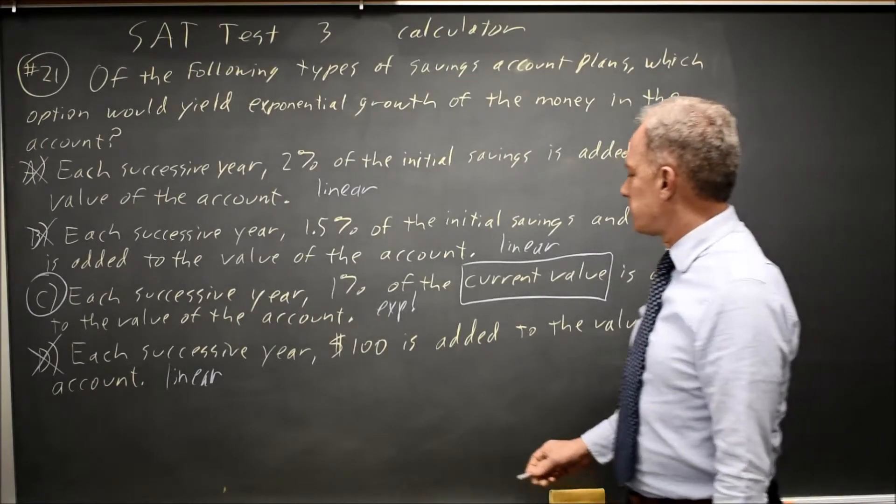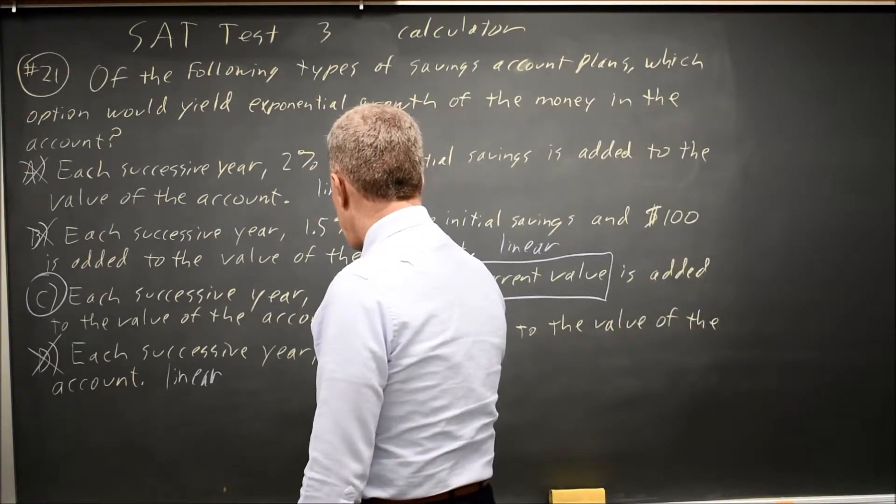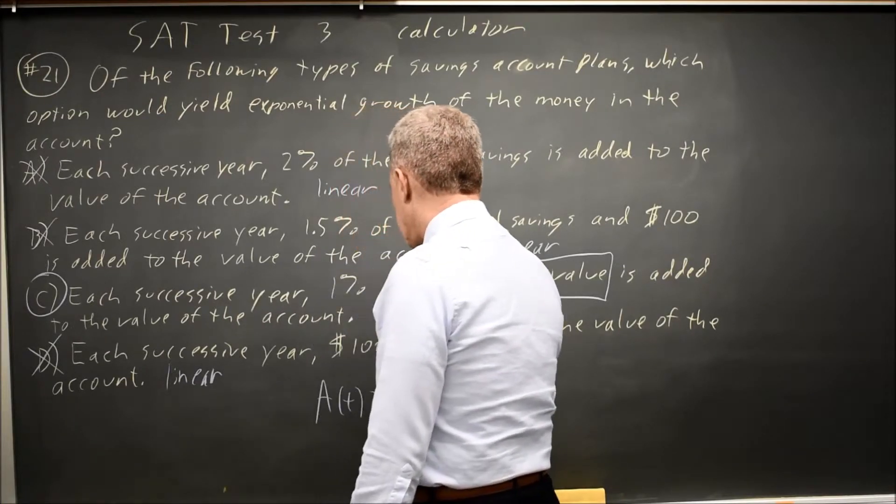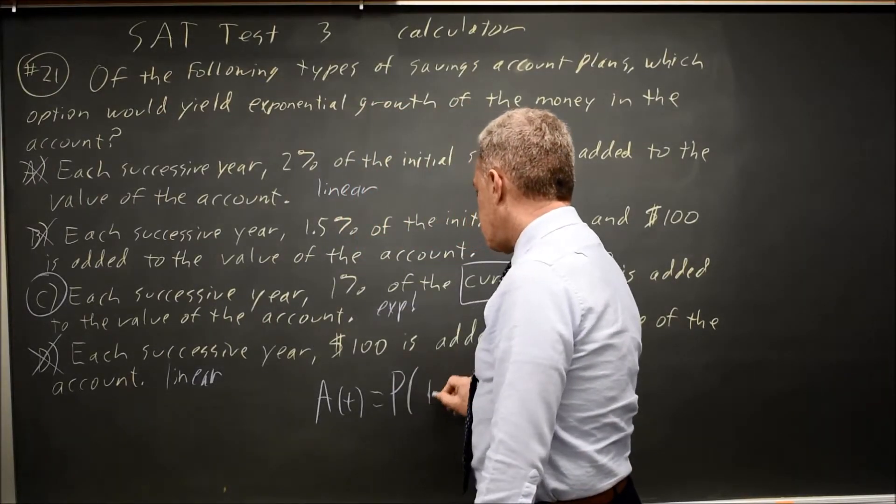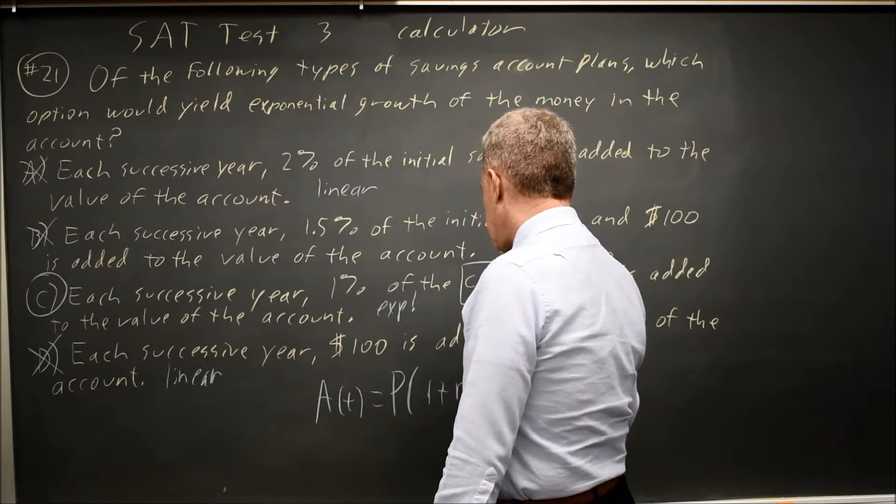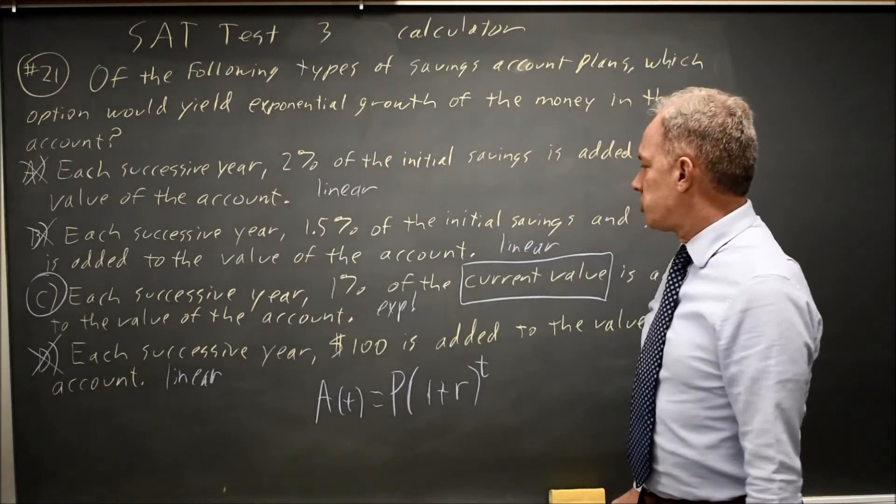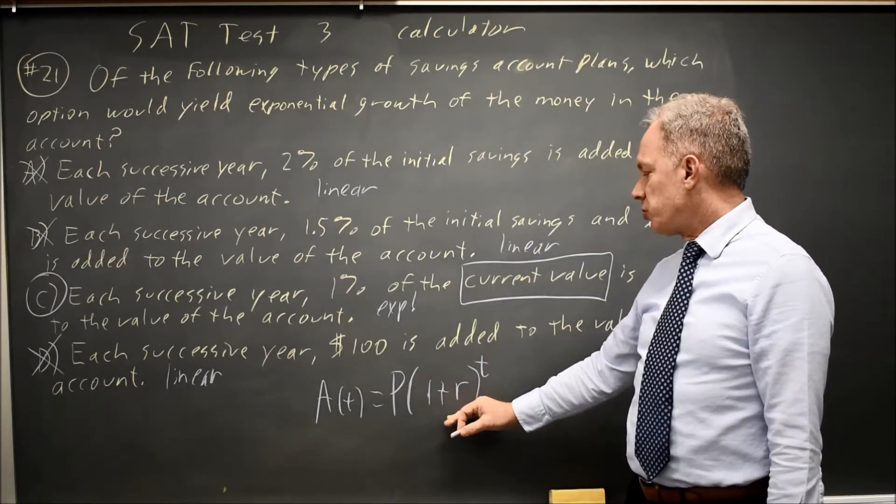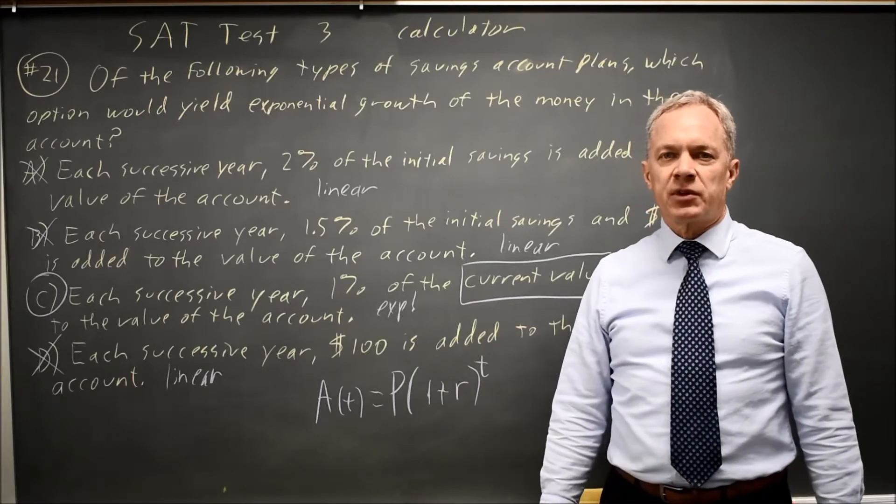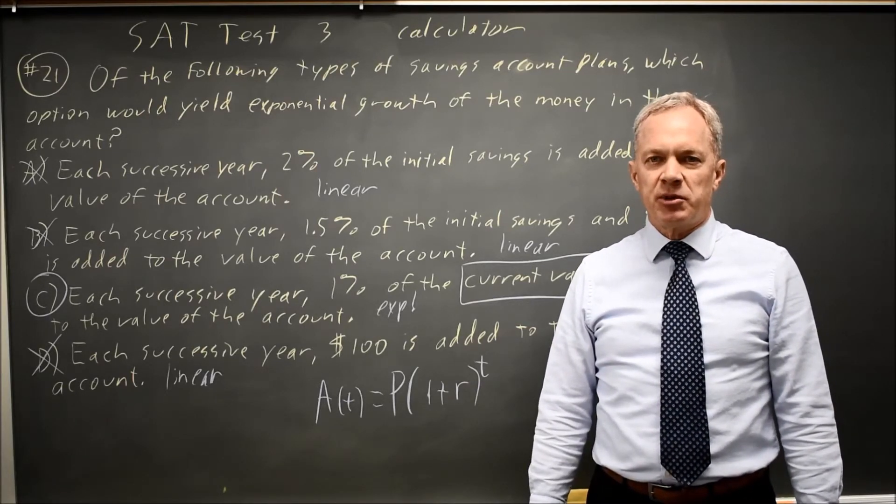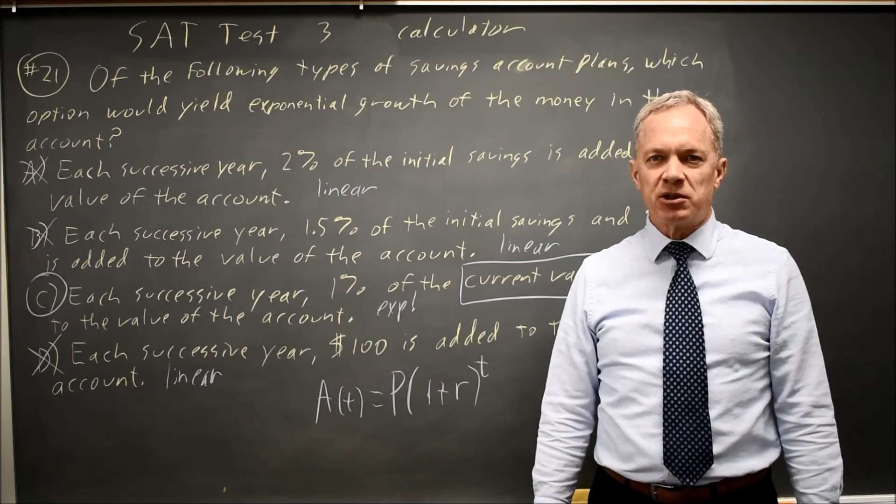Remember the equation for exponential growth. The amount you have in your account at time t is your principal, your starting amount, times 1 plus your interest rate to the t. So in choice C, it would be 1 plus 0.01 to the t times our initial amount. Come back soon for my next math video. With math, there's always more.